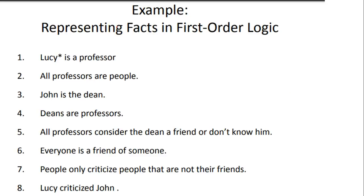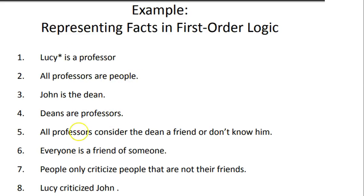Option A is the right answer: syntactically valid but does not express the meaning of the English sentence. As examples, consider these English sentences and their first order logic representations: 'Lucy is a professor,' 'All professors are people,' 'John is the dean,' and 'Deans are professors.' You have to find the first order logic translation of these sentences.